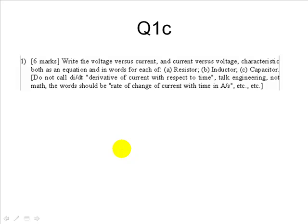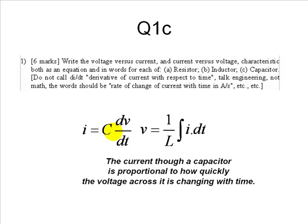And for the capacitor, part C, we can write I is CdVDT, or its inverse, and say, in a capacitor, the current is proportional to how quickly the voltage is changing with time in that capacitor.